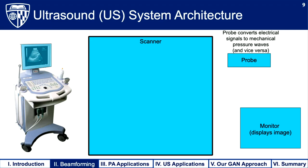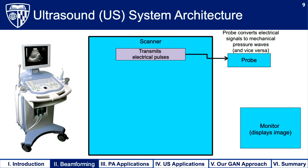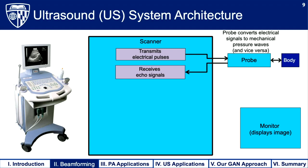The scanner transmits electrical pulses to the ultrasound probe, which contains an array of piezoelectric elements that convert electrical signals into mechanical pressure waves propagated into the body. These pressure waves bounce off different structures in the body, creating echoes that return to the probe, which converts those mechanical pressure waves back into electrical signals. Those signals are then sent to the scanner, which receives them and sends them to an onboard computer for processing.